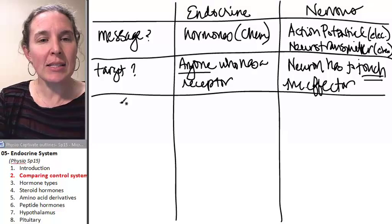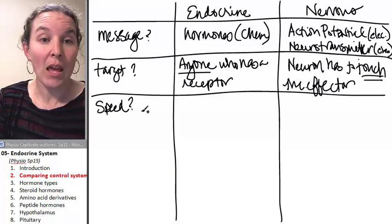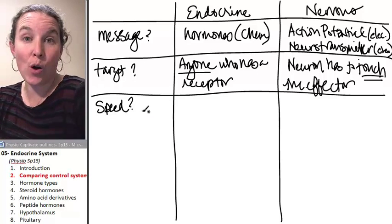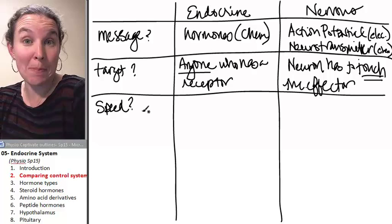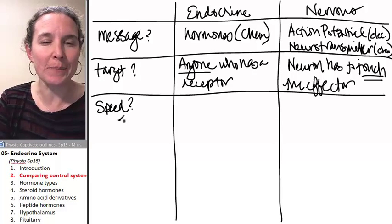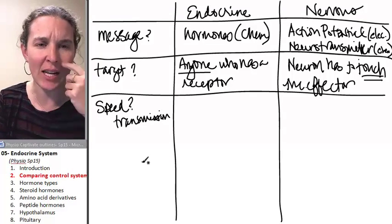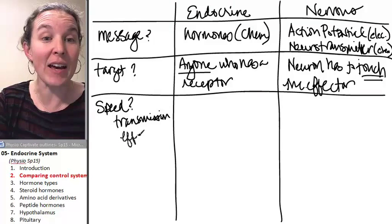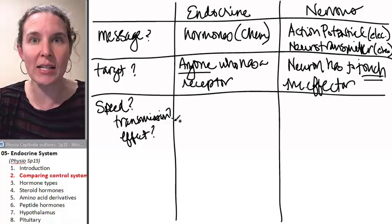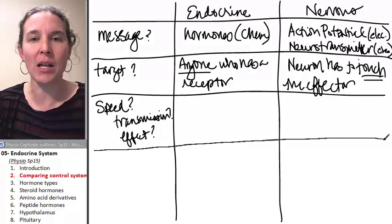There is some speed questions here. The question is the speed of information getting out, information transmission, and the speed of the effect. So let's do transmission. How quickly does the message get out? And effect, how quickly does the message translate into action? And here's the bottom line.